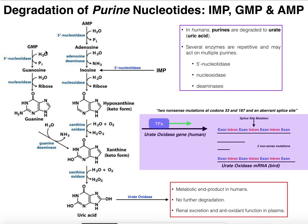Regardless of whether we're talking about GMP, AMP, or IMP, all three of these purine nucleotides have degradation pathways that converge at the formation of xanthine. This is essentially a final common pathway. Xanthine oxidase converts hypoxanthine into xanthine from the AMP/IMP side, and it also has a second activity: it converts xanthine into uric acid.